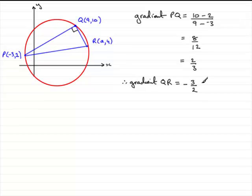Now we know the gradient of QR, we can also get the gradient of QR by just looking at the difference in the y values over the difference in the x values. So if I just put that, also the gradient of QR equals, so if we do the difference in the y values, 10 minus 4, all divided by the difference in the x values, 9 minus a. So what we've got now is that this equals 6 over 9 minus a.